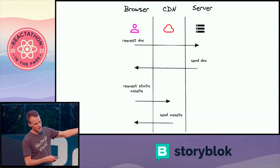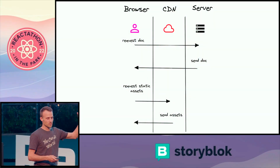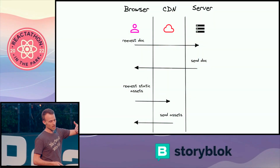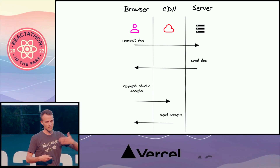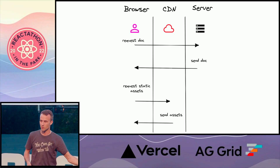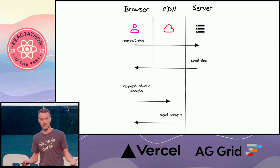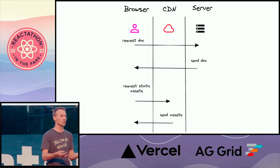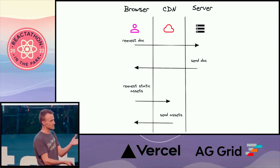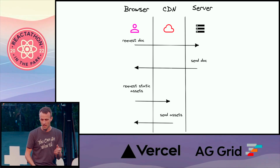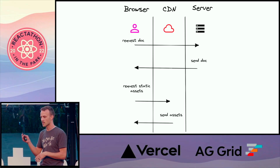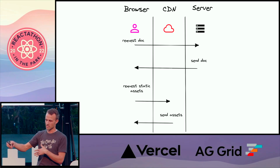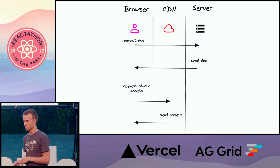But they still have to go get their data and get the HTML for server rendering from that server. Architecturally, the user requests a document, it goes to the server, the server generates the document and sends it back to the browser. At that point the browser knows there are link tags, image tags, and JavaScript script tags, so it goes and gets those static assets from the CDN.